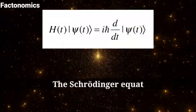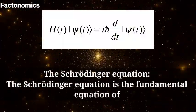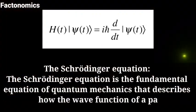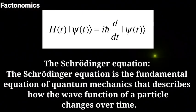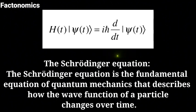Fact number 8. The Schrödinger equation. The Schrödinger equation is the fundamental equation of quantum mechanics that describes how the wave function of a particle changes over time.